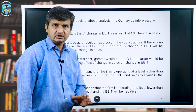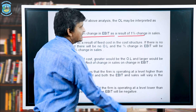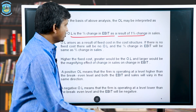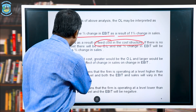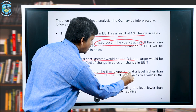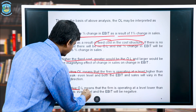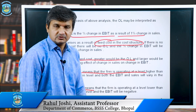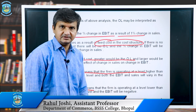To summarize conclusions about operating leverage: first, it is the percentage change in EBIT as a result of a one percent change in sales. Second, it arises because of fixed cost in the cost structure. Third, higher the fixed cost, greater the operating leverage. Fourth, a positive operating leverage means the firm is operating above breakeven level. Fifth, a negative operating leverage means the firm is operating below breakeven. In the next class we will discuss financial leverage.